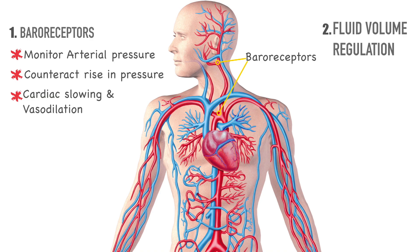Number two is fluid volume regulation. Changes in fluid volume also affect the systemic arterial pressure. For example, if there is an excess of sodium or water in a person's body, the blood pressure would rise. If the kidneys are working correctly, a rise in systemic arterial pressure would produce diuresis, or excessive voiding. By controlling sodium and water excretion, the body is able to lower blood pressure.